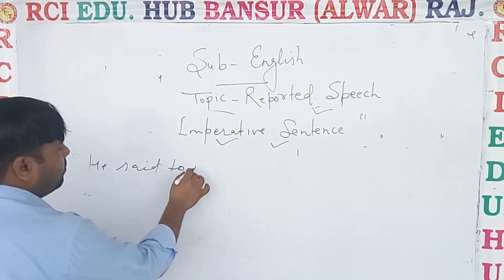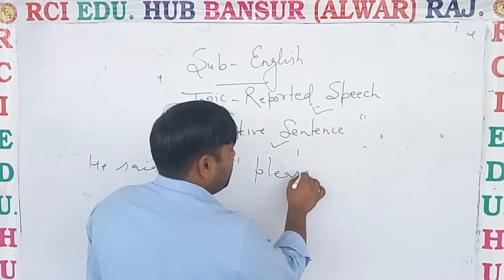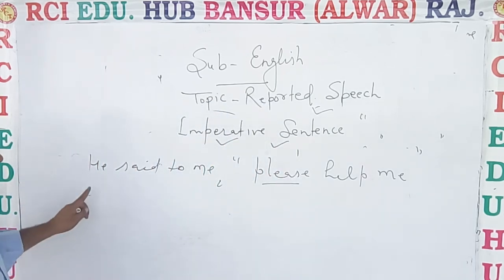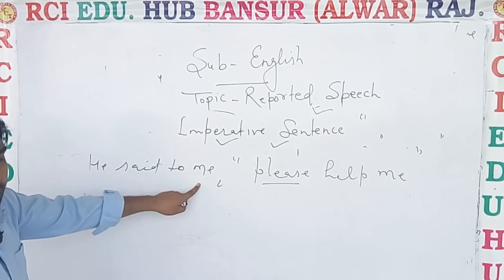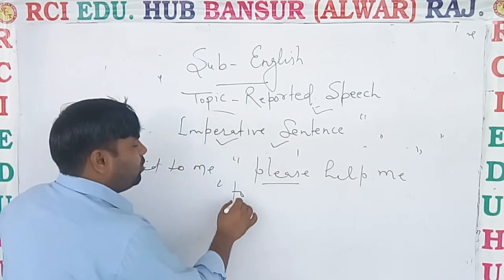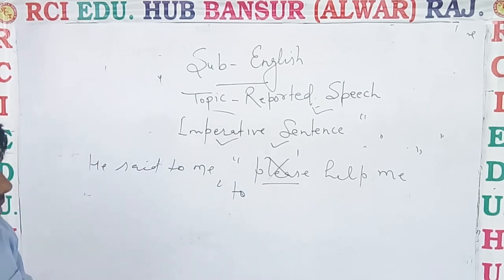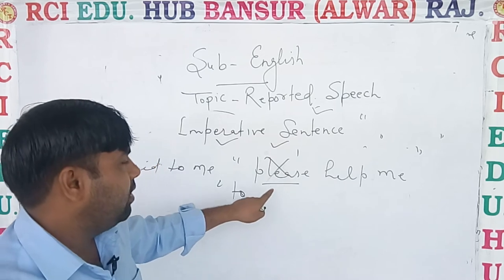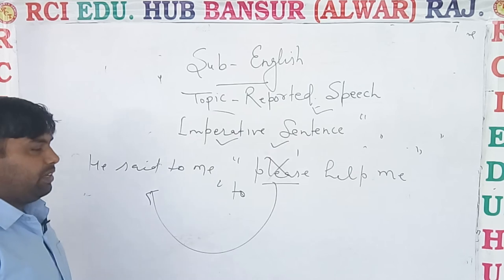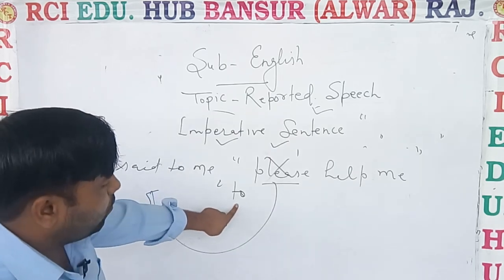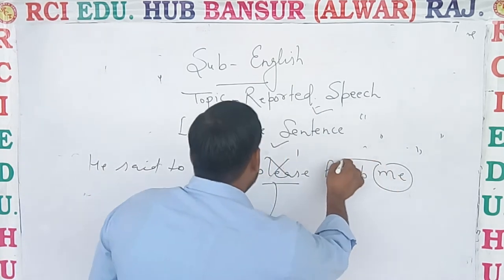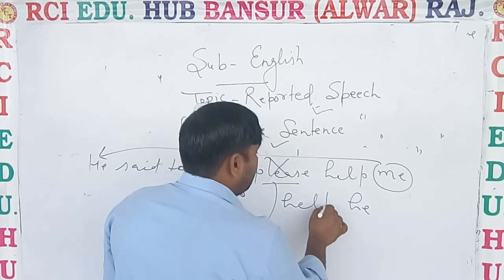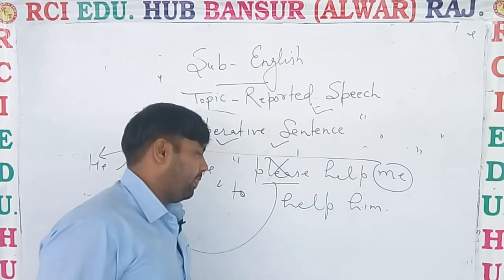He said to me, 'Please help me.' 'Please' means request. So: 'He requested me.' To remove the comma, we use 'to', and 'please' and 'kindly' need not be written, because they are replaced by the word 'requested'. Then: 'He requested me to help him.' Since the subject is 'he', the first person object changes to 'him'. So: 'He requested me to help him'.